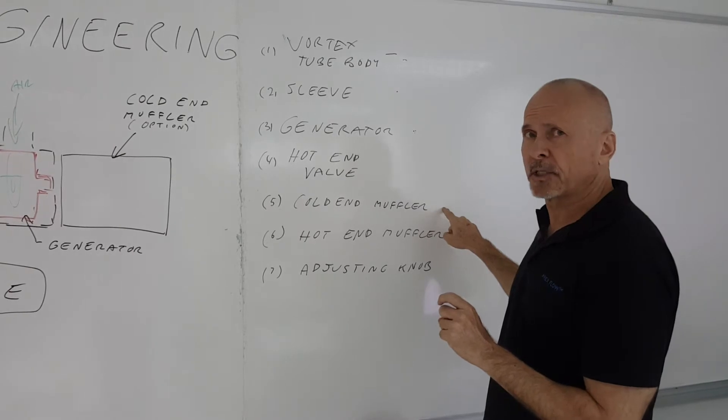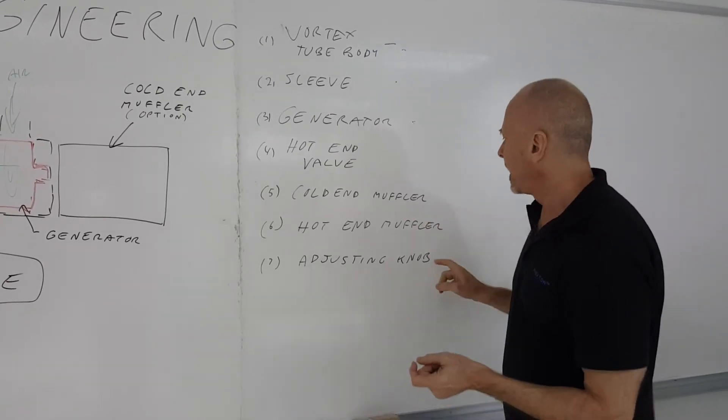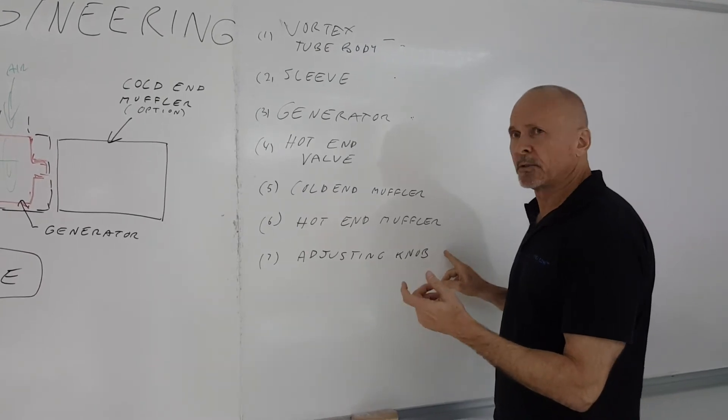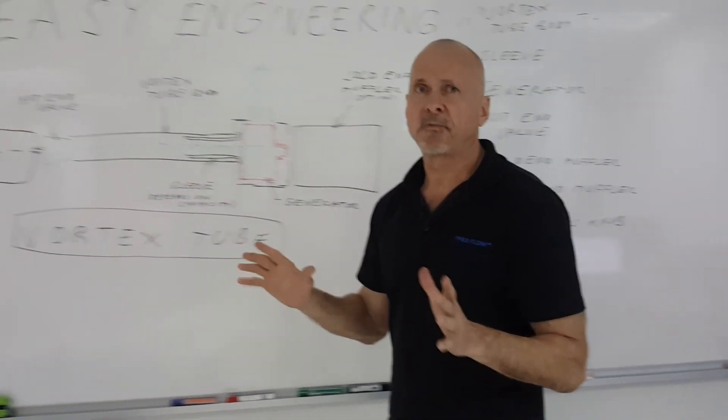Then you have the cold end muffler to reduce the noise. You have a hot end muffler to reduce the noise at the hot end. And you have an optional adjustable knob to be able to make it more easily to adjust. So those are the parts of the Vortex 2.